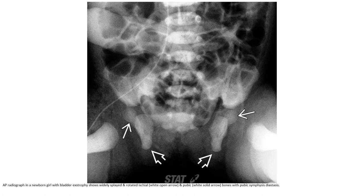AP radiograph in a newborn girl with bladder exstrophy shows widely splayed and rotated ischial bones and pubic bones with pubic symphysis diastasis.